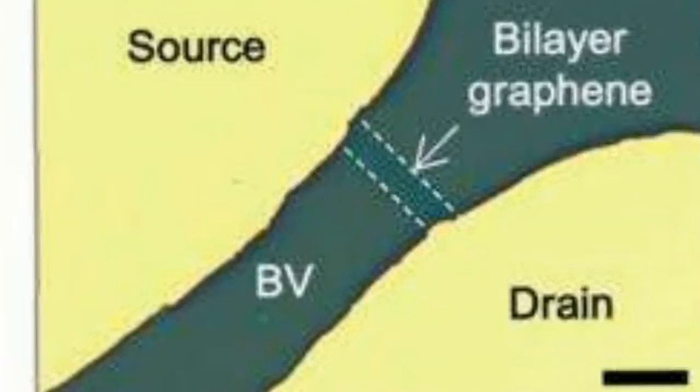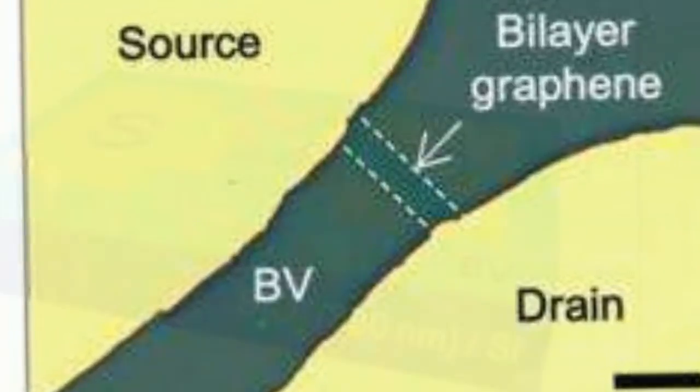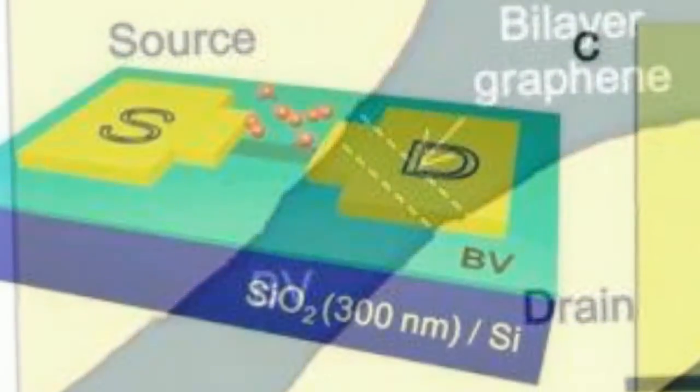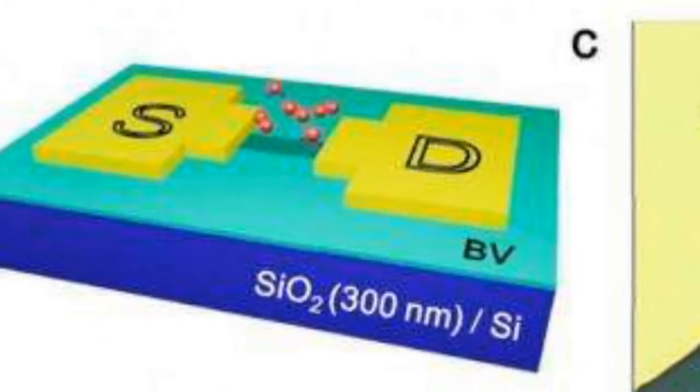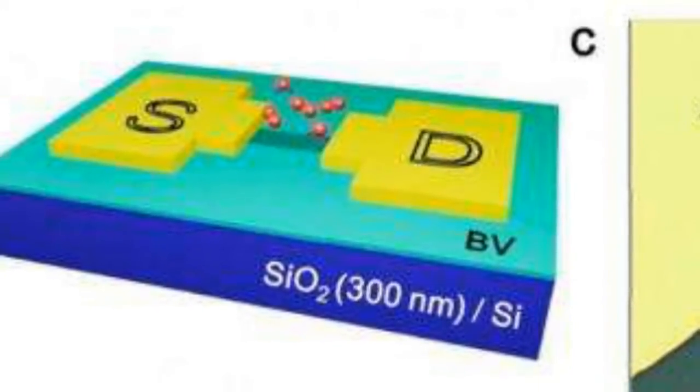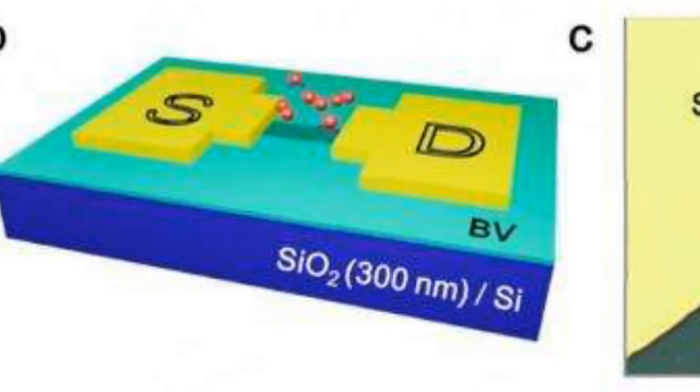As a result, the electrons are always conducting, all the time, which means that this form of graphene can't be used to build transistors because it has no off-state.